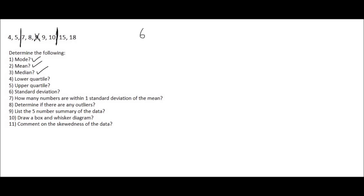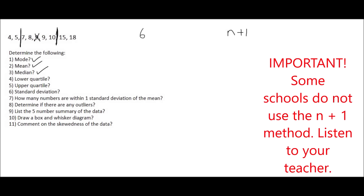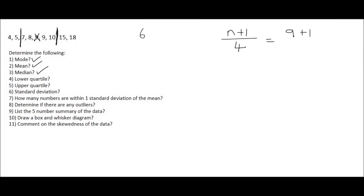Mathematically, we use n plus one again, but because we're doing quarters we divide by four. There are nine digits, so nine plus one divided by four gives us 2.5. So we go to position 2.5 — position one is four, position two is five, and position 2.5 is exactly in between five and seven, giving us six.